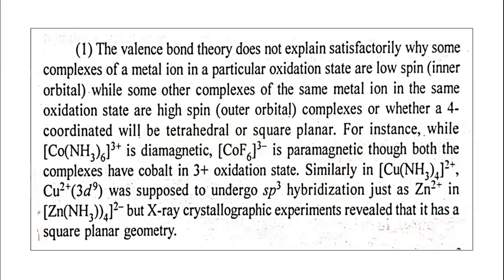Another aspect VBT cannot explain is whether a four-coordinated complex will be tetrahedral or square planar. This is a serious drawback of valence bond theory — it does not have a proper answer to explain why some complexes of a metal ion in a particular oxidation state are low spin while others are high spin.